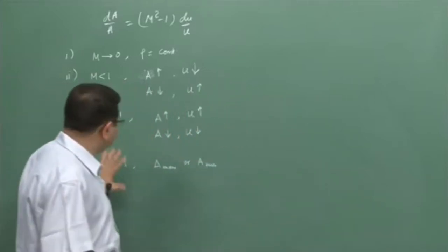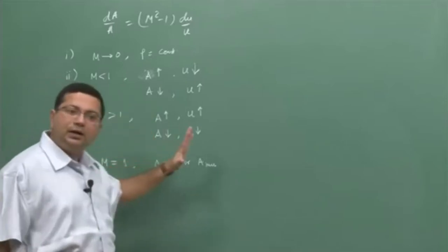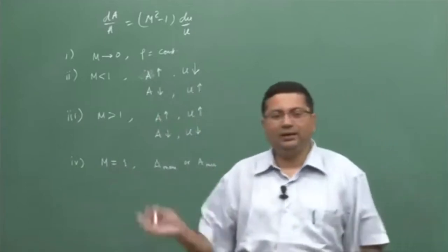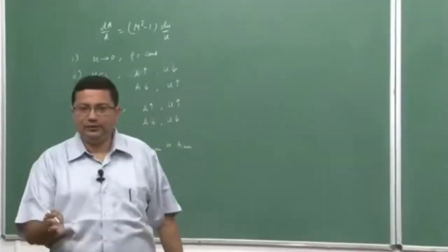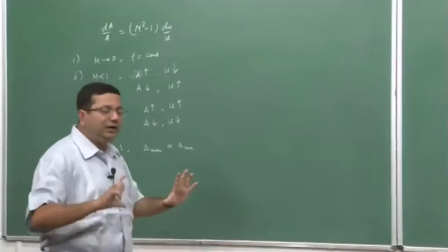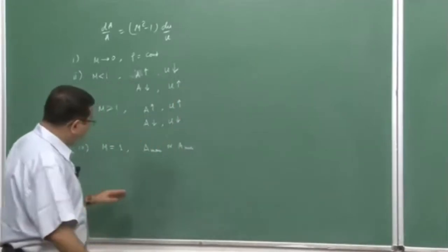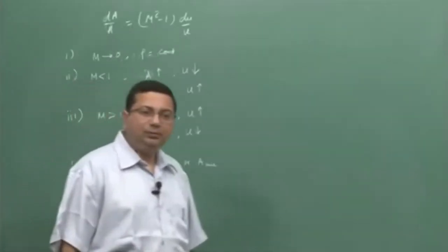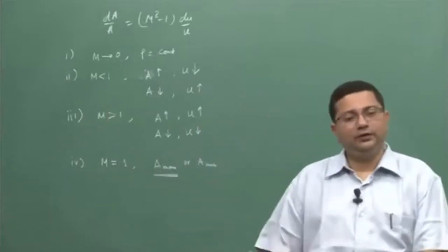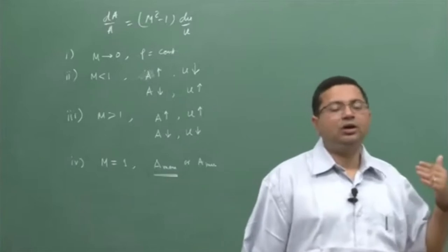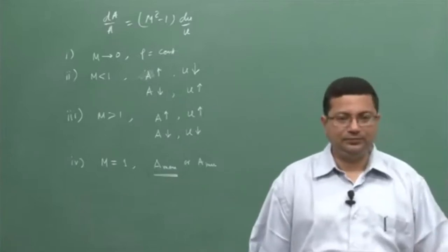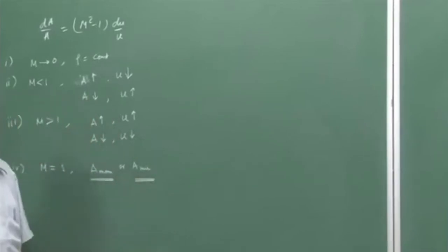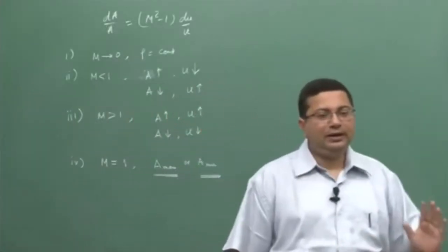Then what we did in the last class is that we looked at various combinations of area variation, so that we have either a maximum or a minimum area in between. We showed that this maximum area is not physically possible either for a nozzle flow or a diffuser flow, because it does not give a monotonic variation in velocity.